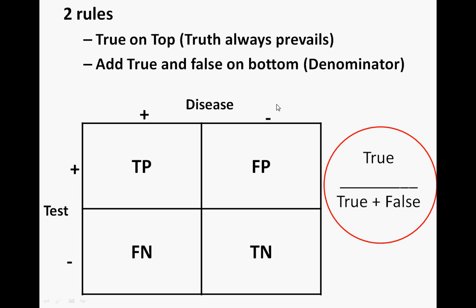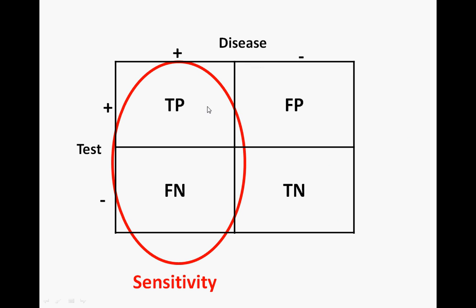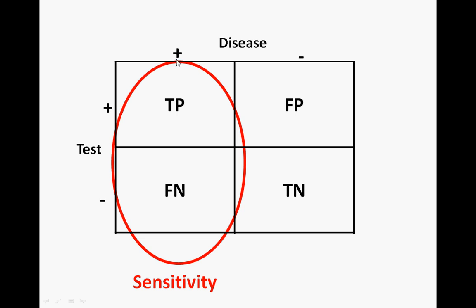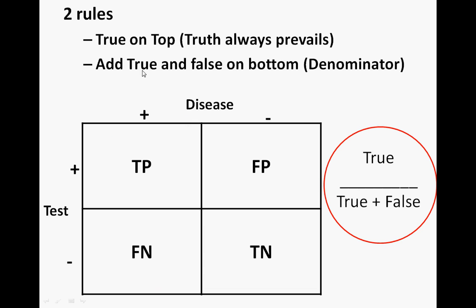For sensitivity, draw your algorithm and put a circle around the left two values stacked on top of each other. The equation is true positive over true positive plus false negative. The numerator is always the true value within the circled area — that's the true positive. Then divide by adding true positive and false negative. Circle the left column and you have your sensitivity equation.